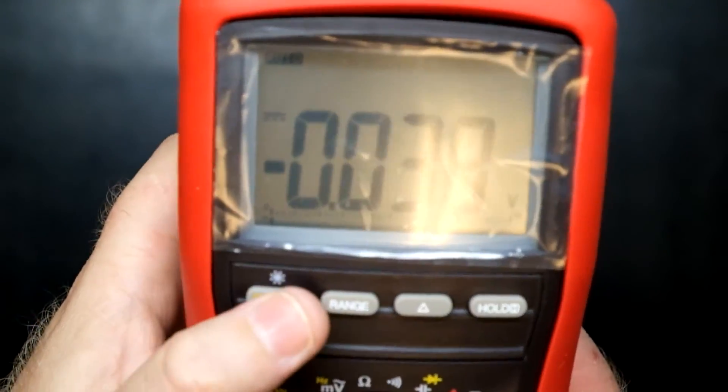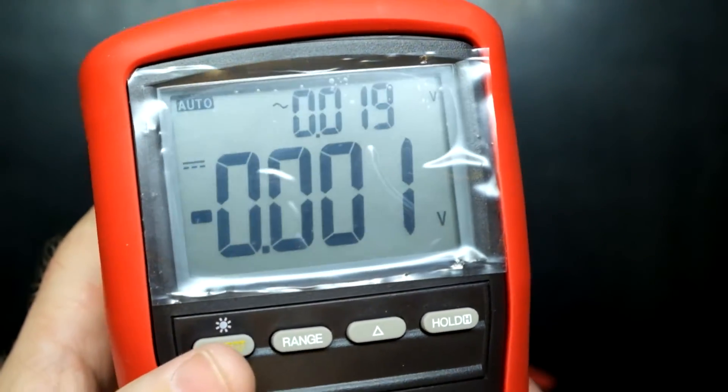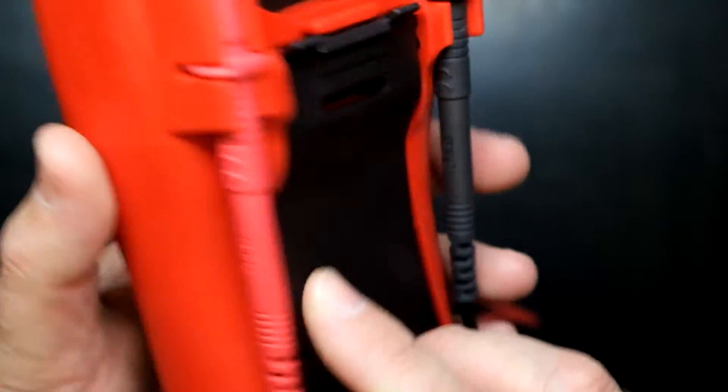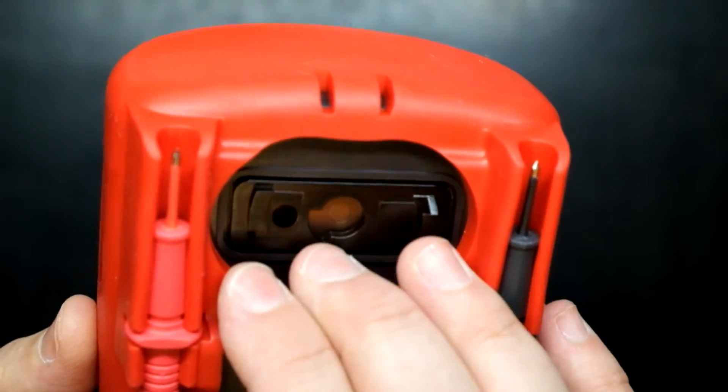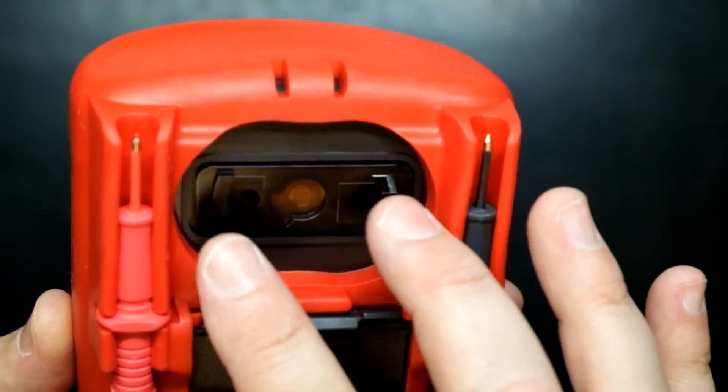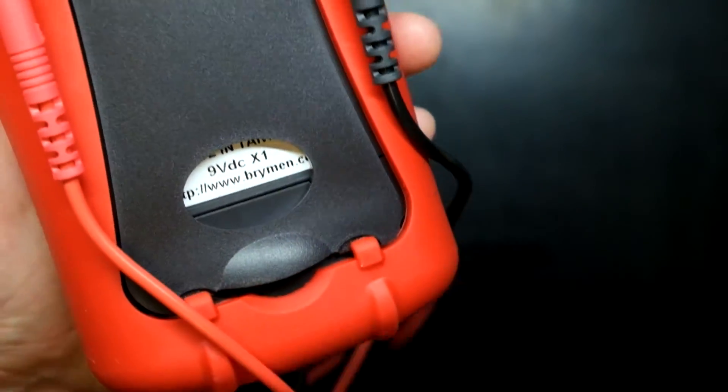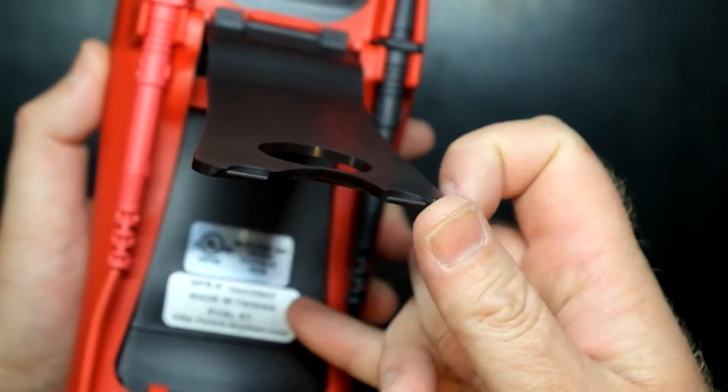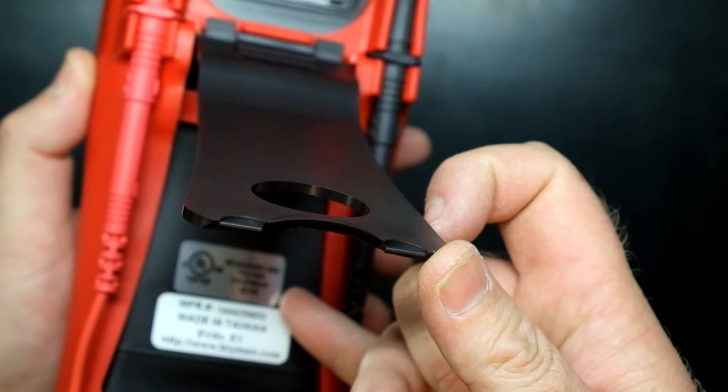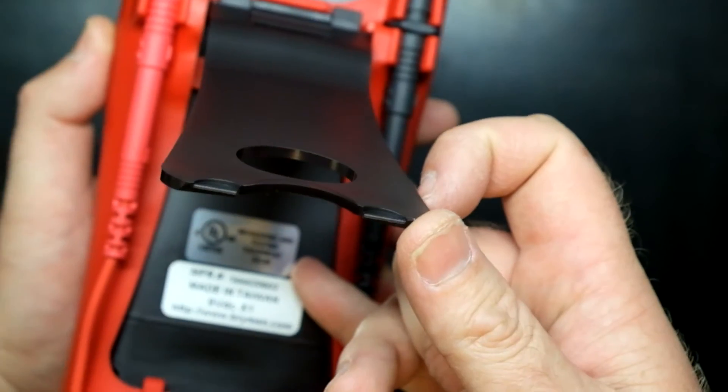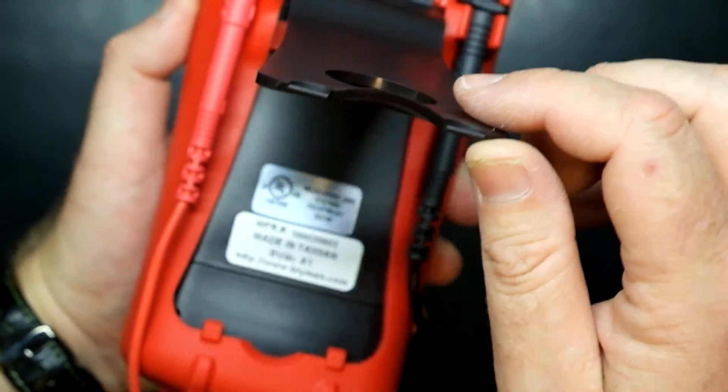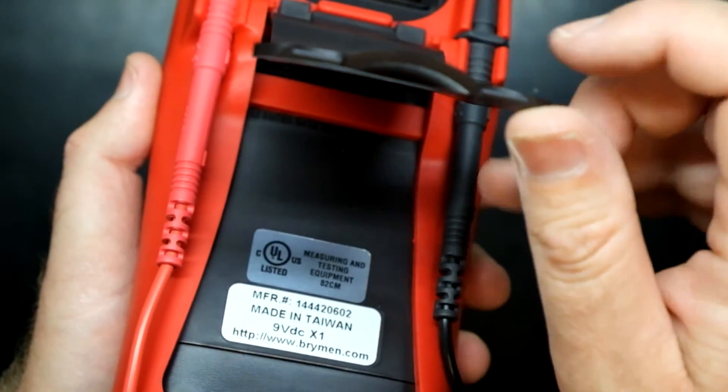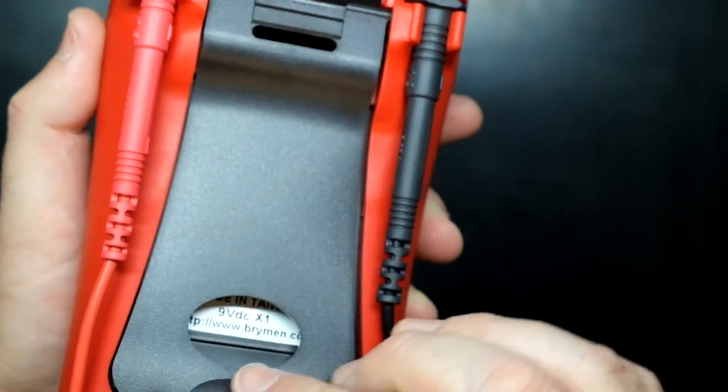As you can see, the display is still the nice double display that these meters are known for. Probe storage is still convenient at the back. You've got your connection points for your PC interface. A nice decent tilting bail makes it nice and easy. You've got your UL listed sticker for measuring and testing equipment, proving that the meter is what it says it is. Then you've got made in Taiwan, 9 volts DC, manufacturing number, pretty much all your serial numbers on there.